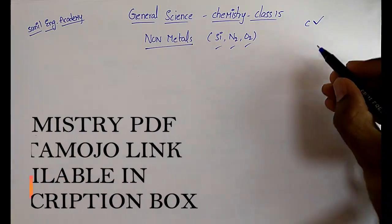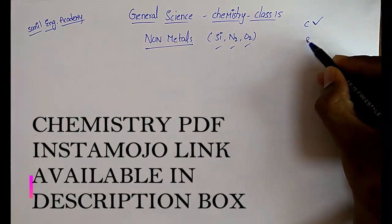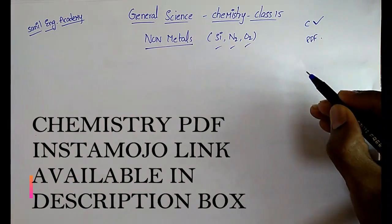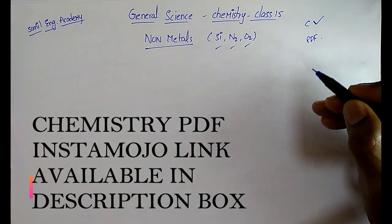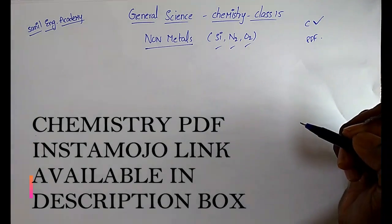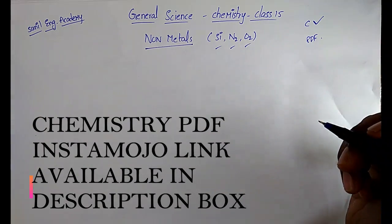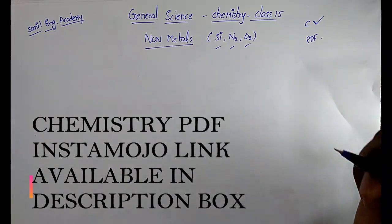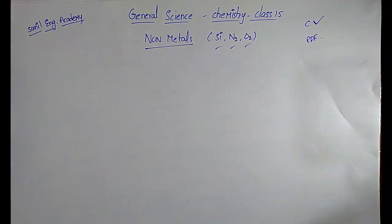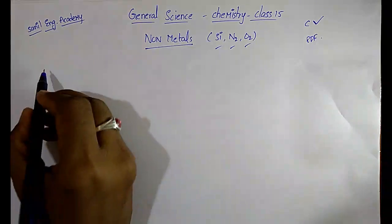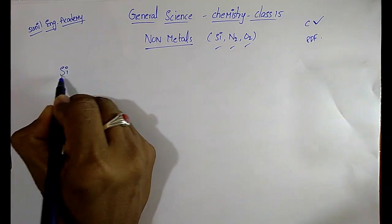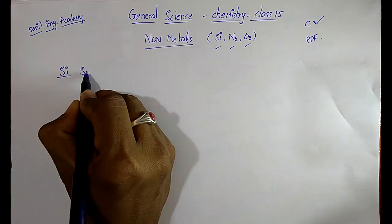If you want chemistry class notes as PDF, you can download from the InstaMojo link which is in my description box. Click on that link and download the chemistry PDF. Now I want to discuss silicon.